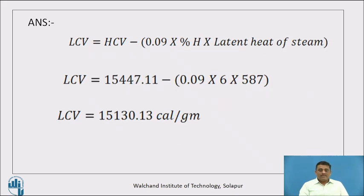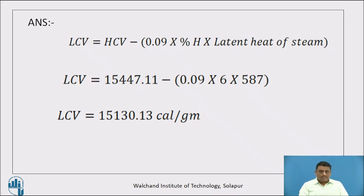The formula for LCV is: LCV = HCV − 0.09 × (% of hydrogen) × latent heat of steam. Substituting: HCV = 15,447.11, percentage of hydrogen = 6, latent heat of steam = 587 kcal/kg. The answer for LCV is 15,130.13 cal/g.